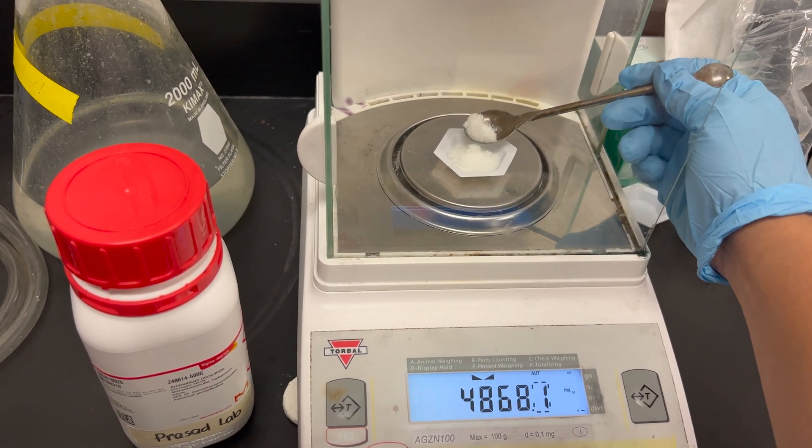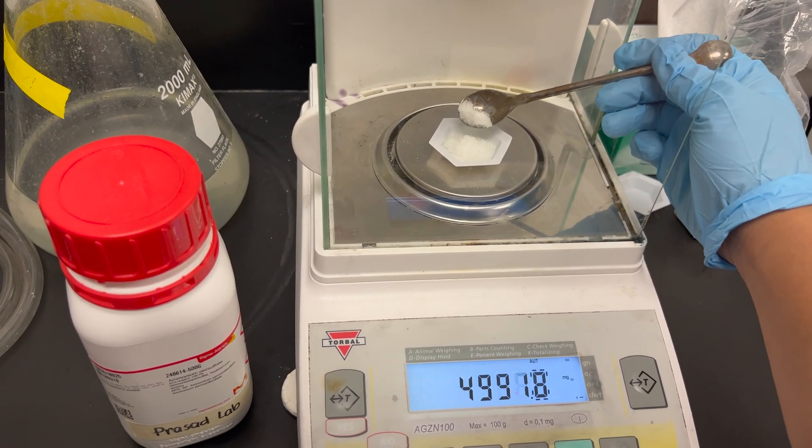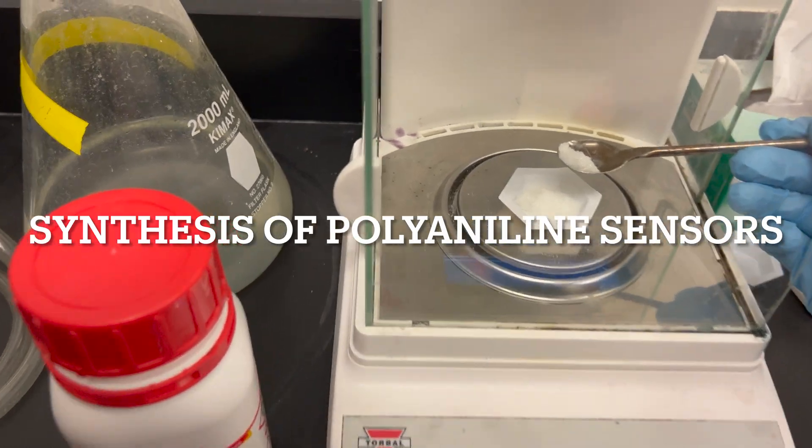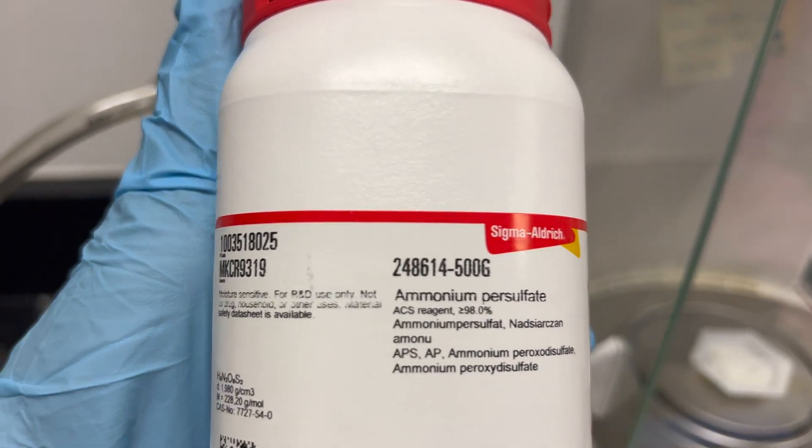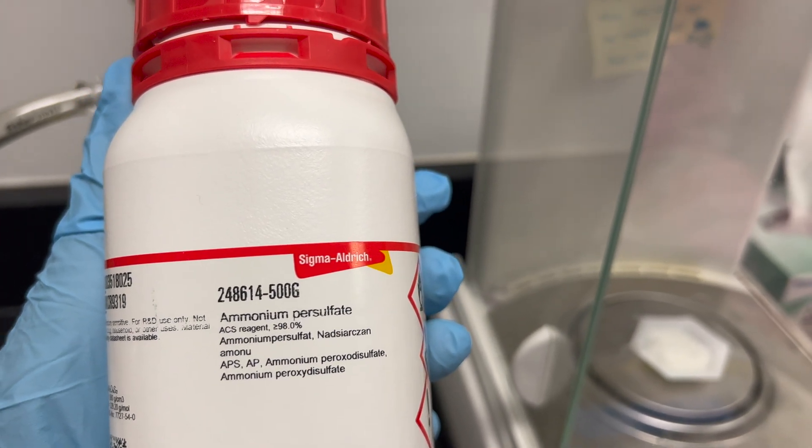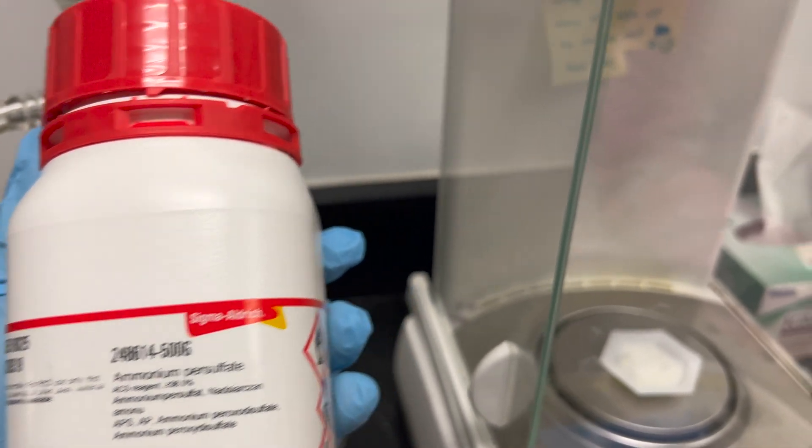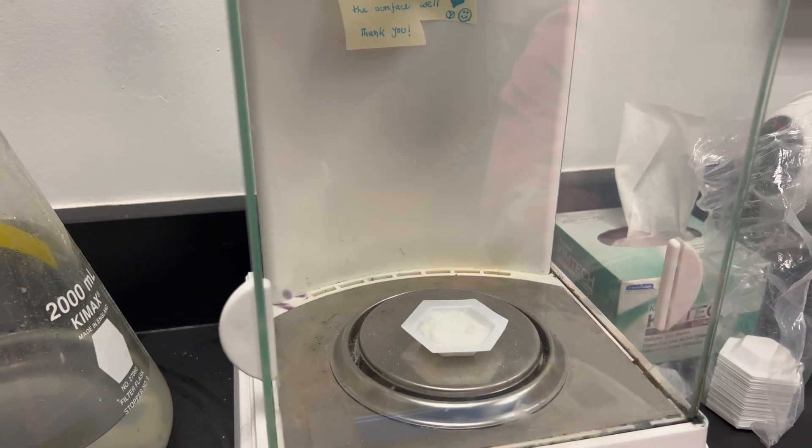Hello everyone, welcome to the Prasad lab. Today we're going to be synthesizing polyaniline sensors. We began by measuring 5 grams of ammonium persulfate, which we are going to mix with 50 milliliters of distilled water.